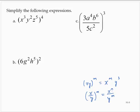Looking at this first exercise, we have x to the third, y to the second, z to the fifth, all to the fourth. I can write that as x to the third to the fourth, y to the second to the fourth, z to the fifth to the fourth.